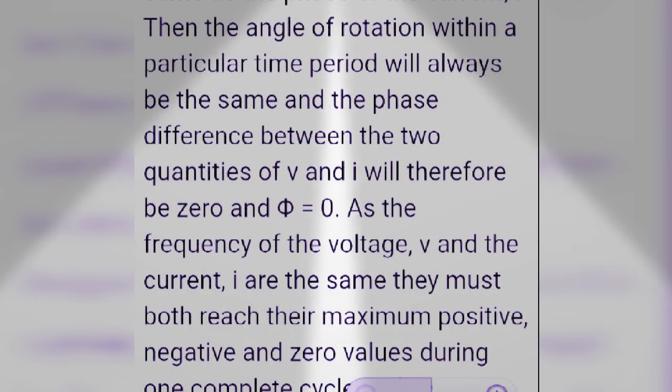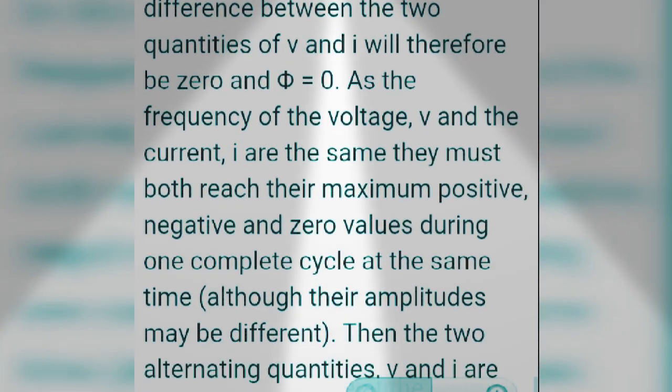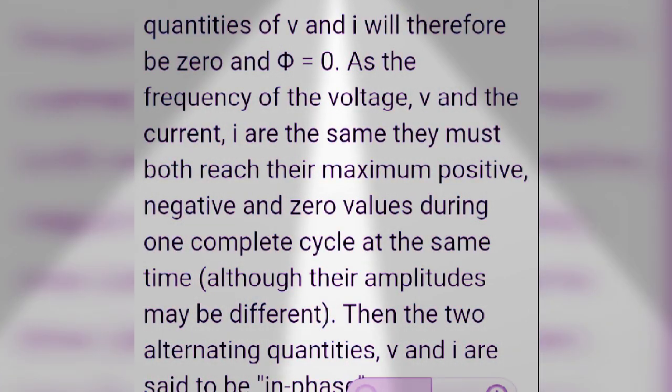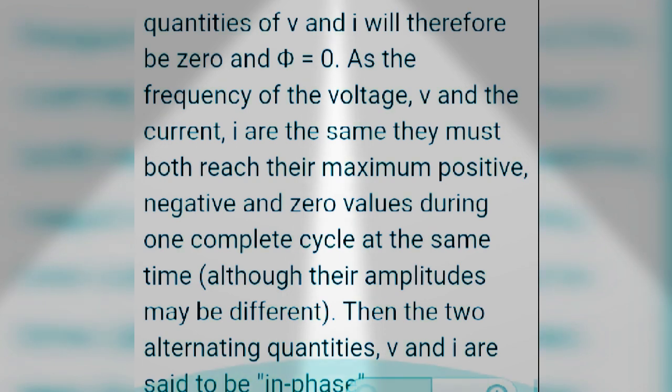The phase difference between the two quantities V and I will therefore be zero. As the frequency of the voltage V and the current I are the same, they must both reach their maximum positive, negative, and zero values during one complete cycle at the same time, although their amplitudes may be different. Then the two alternating quantities V and I are said to be in phase.